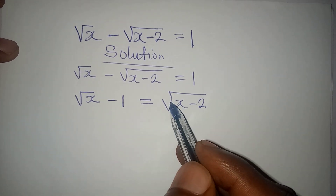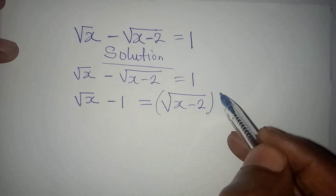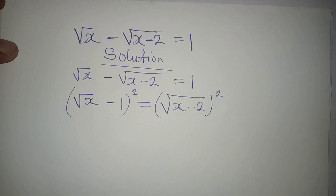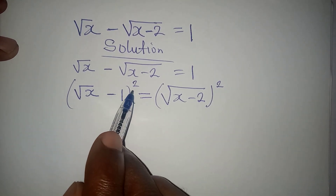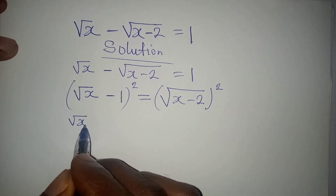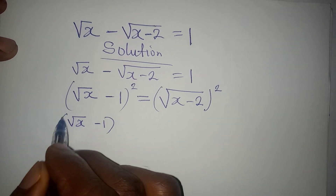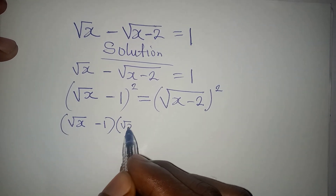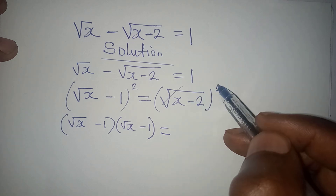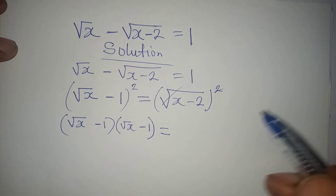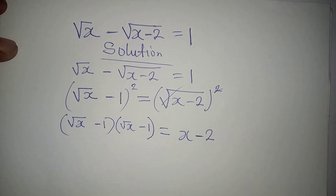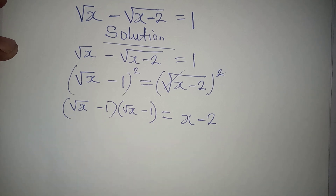Now I have to eliminate the square roots, and I do that by squaring both sides. To square the left hand side I need to multiply it by itself, so I have square root of x minus 1, multiplied by square root of x minus 1. On the right side, the square root and the square cancel each other, giving us x minus 2.